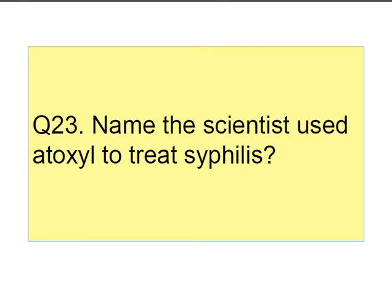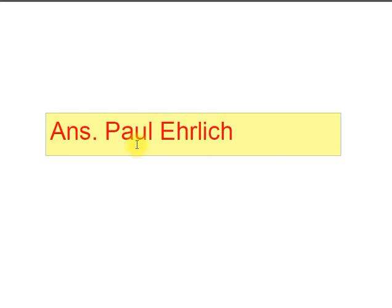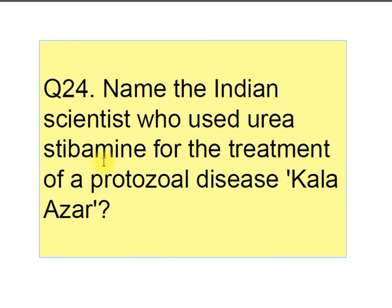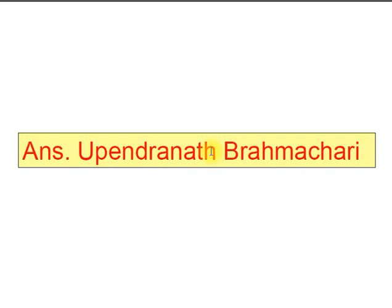Question number twenty-four: name the scientist who used atoxyl to treat syphilis. Answer is Paul Ehrlich. Paul Ehrlich is also known as father of chemotherapy and was the first one to give a drug against syphilis. Name the Indian scientist who used urea stibamine for the treatment of the protozoal disease Kala Azar. Answer is Upendra Brahmachari. He used urea stibamine, a urea salt of para-aminophenyl stibinic acid.